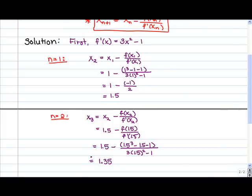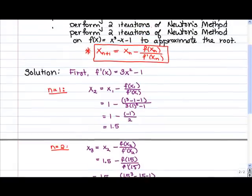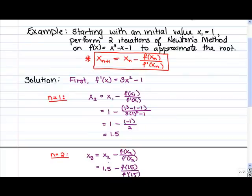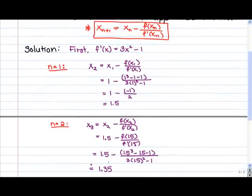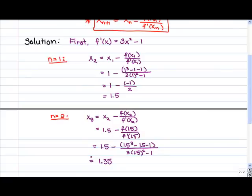So overall, just to recap what we did: we used our formula for Newton's method and we knew we needed to find f'(x) because that's an important component of the formula. Our first step was to find the derivative of the given function. Next, to find the first iteration, we substituted in the starting value x₁ = 1, and we were able to find x₂. Once we had x₂, we used that to find x₃. Since we were only asked for two iterations and we've done both, we're done.